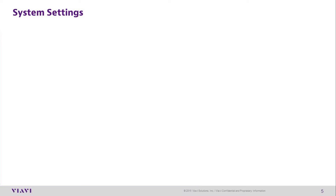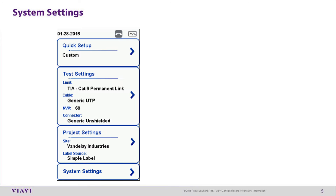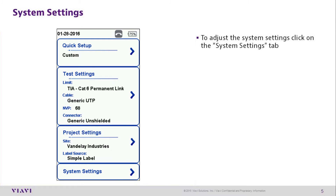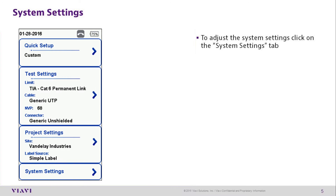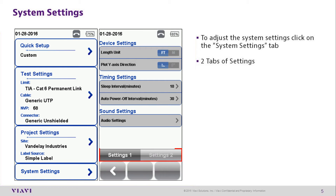To adjust system settings, click the arrow next to System Settings. There are two tabs of system settings available: System Settings 1 and System Settings 2.